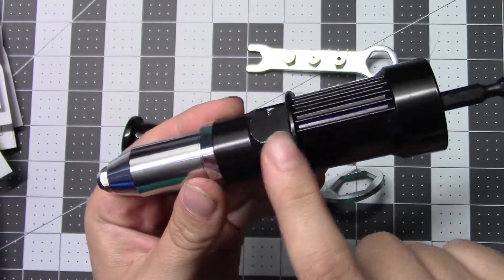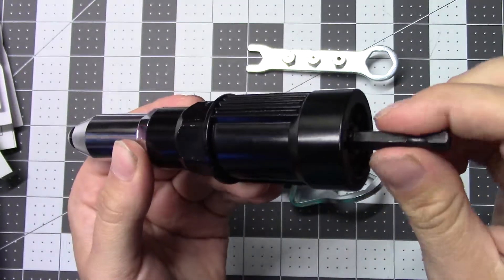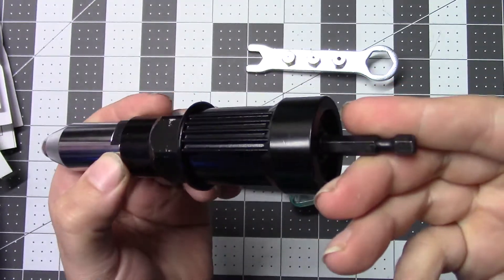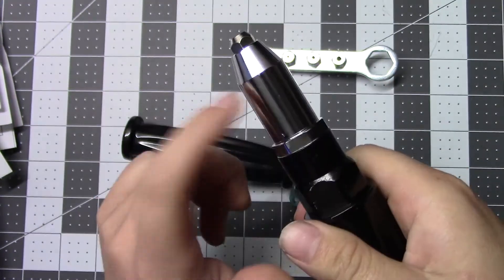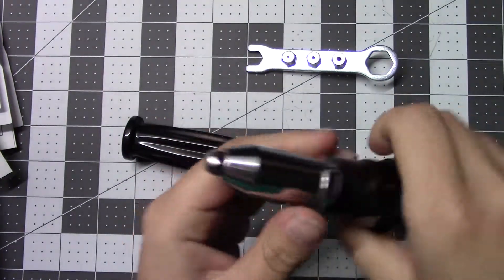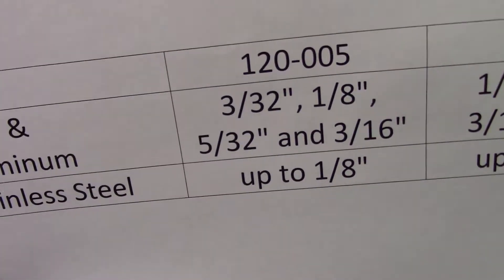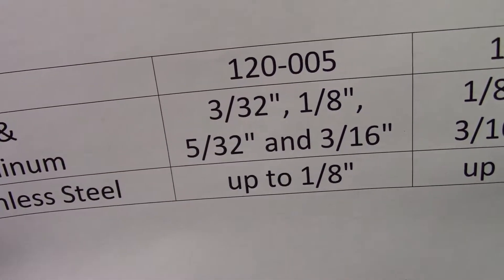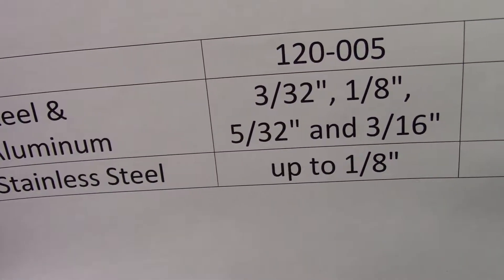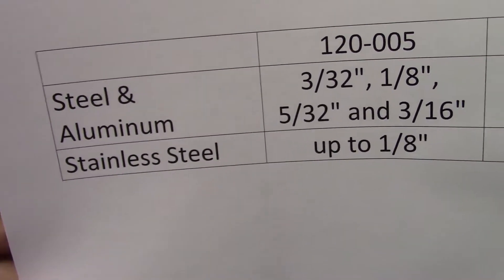All this black here is anodized aluminum, steel cord wrench, quick-attach shaft, and the silver up here is steel. This is capable of doing 3/32 inch through 3/16 inch steel and aluminum rivets and stainless steel up to 1/8 inch.